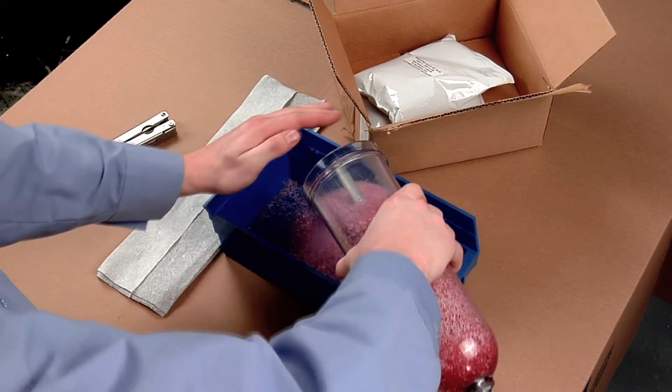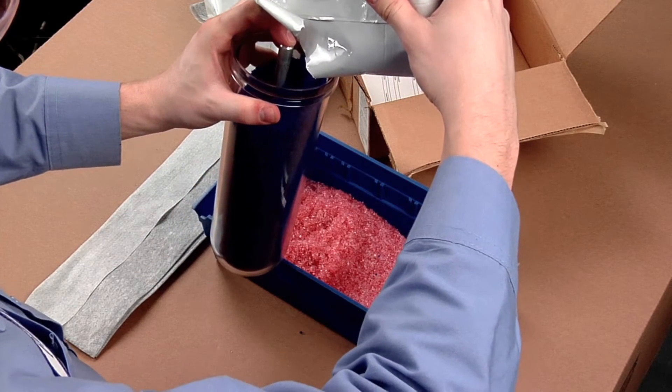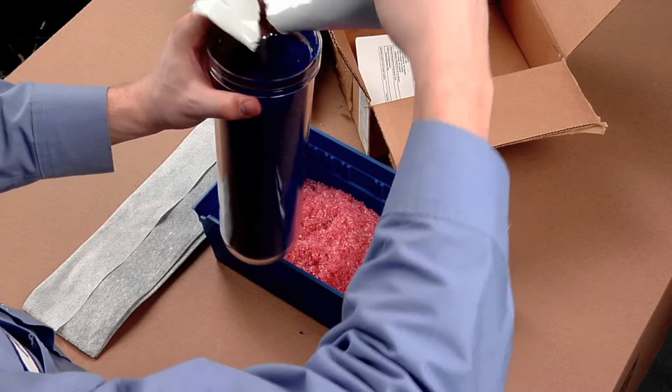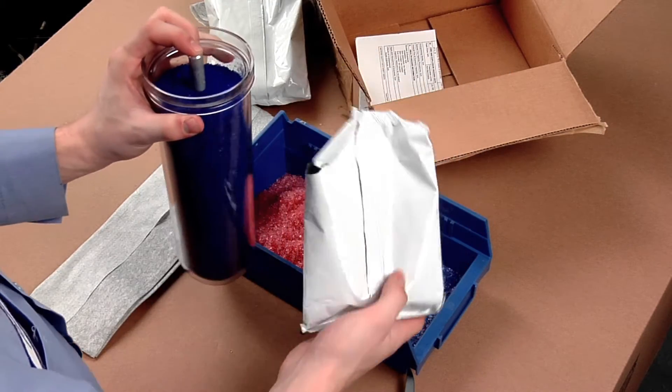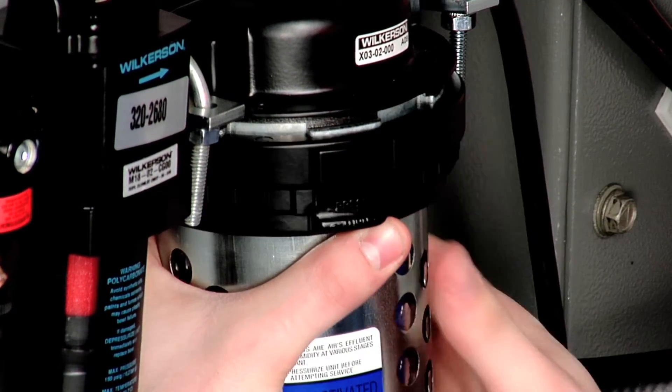Discard or regenerate the used desiccant. Pour new or dried desiccant into the bowl, filling it to within one half inch of the top of the bowl. Do not allow desiccant to enter the center tube. Reinstall the bowl on the housing and secure it in place.